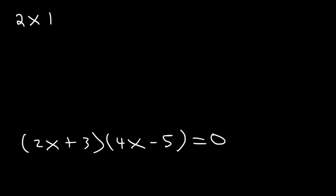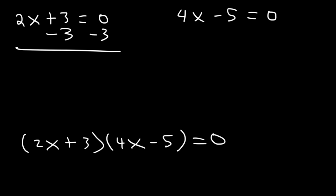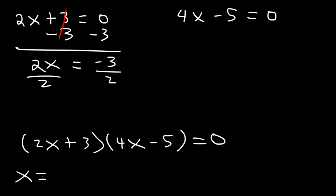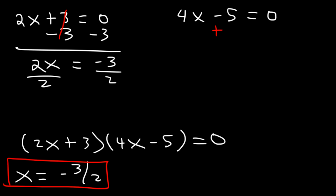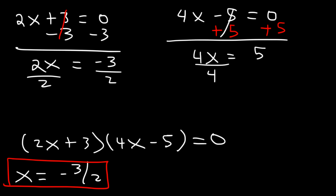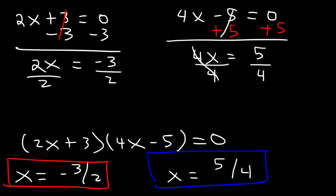Now let's set 2x plus 3 equal to 0, and 4x minus 5 equal to 0. In the first equation, subtract 3 from both sides: 2x is equal to negative 3, then divide by 2 — x is equal to negative 3 over 2. For the other equation, add 5 to both sides: 4x is equal to 5, divide both sides by 4 — x is equal to 5 over 4. And that's it for this problem.